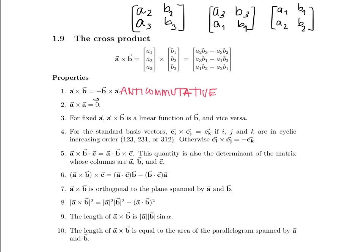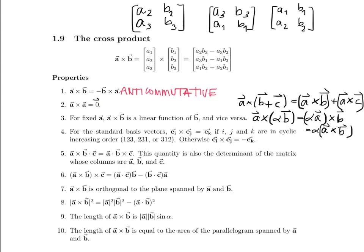For fixed A, A crossed with B is a linear function of B, and vice versa. That means two things. First, A crossed with the sum of vectors B and C equals A crossed with B plus A crossed with C. Second, if alpha is a scalar, A crossed with alpha times B equals alpha times A crossed with B, which also equals alpha times the quantity A crossed with B. All of these are equivalent.